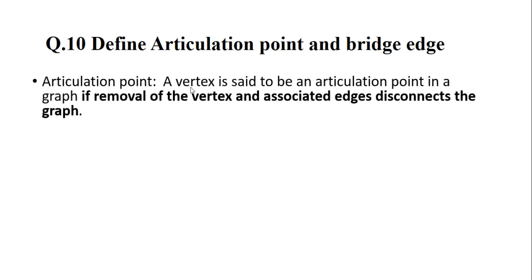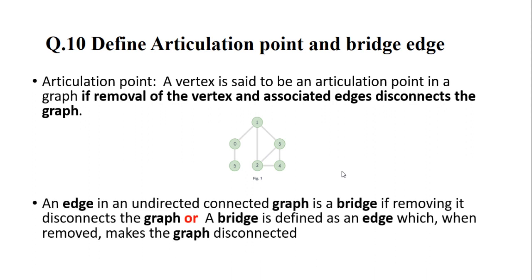Question 10: Define Articulation Point and Bridge. What is an Articulation Point? An articulation point is a vertex in a graph such that removal of the vertex and its associated edges disconnects the graph. For example, suppose vertex 1 is removed; the graph splits into two disconnected components. A bridge in an undirected connected graph is an edge such that removing it disconnects the graph. A bridge is an edge which, when removed, makes the graph disconnected.